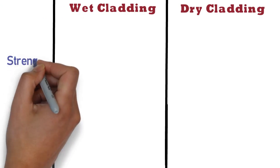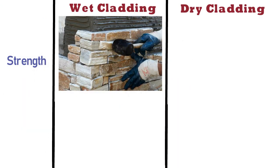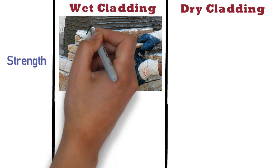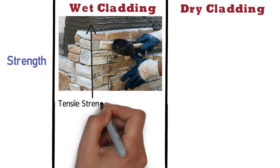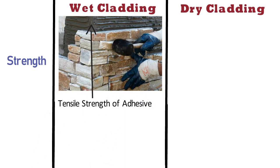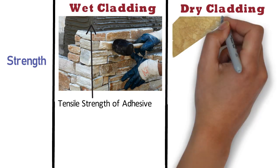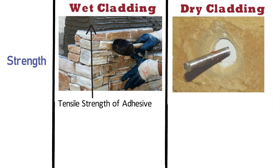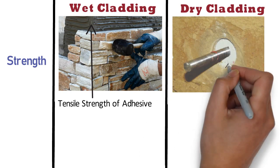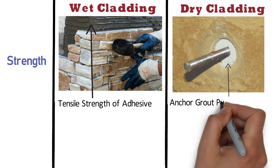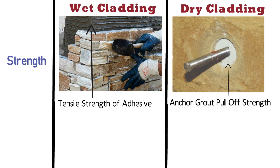Strength: In case of wet cladding, the bonding of tile or stone to the surface will depend on the tensile strength of the adhesive. Whereas in case of dry wall cladding, the bonding of tile or stone to the surface will depend on the anchor ground pull-off strength with the surface matrix.